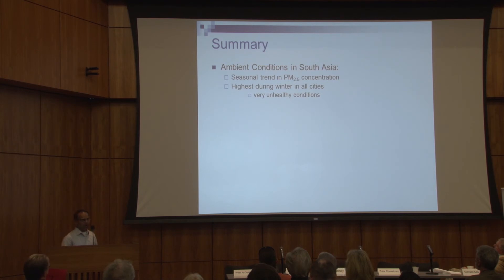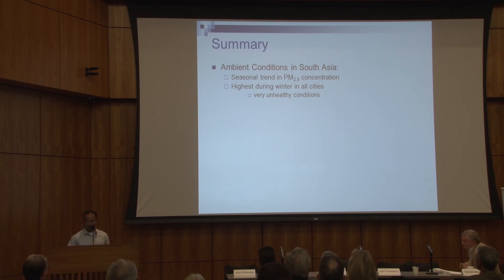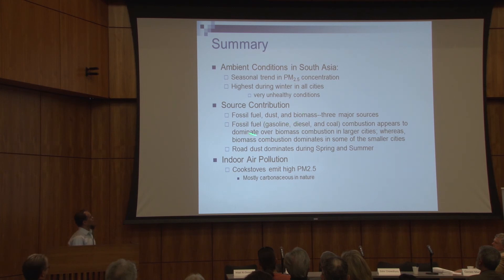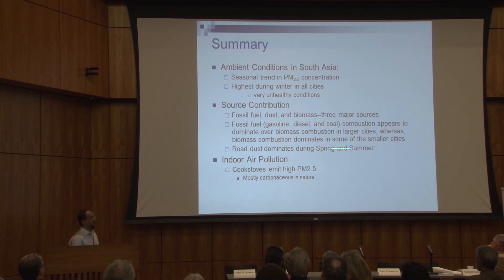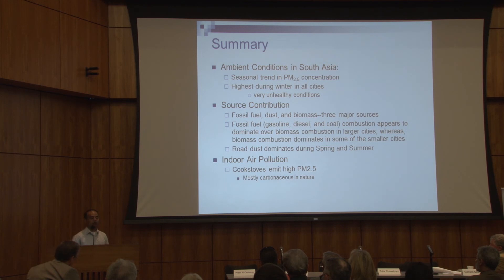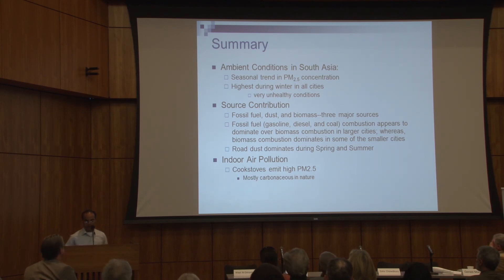In summary, ambient conditions in South Asia show a seasonal trend of PM2.5 concentration — higher during wintertime with very unhealthy conditions, lower in summertime. There are a variety of contributing sources: biomass, dust, and fossil fuel are the three major sources of fine particle emission. Fossil fuel dominates in some cities while biomass dominates in others. Road dust is quite significant during the dry part of the year. For indoor air pollution, cook stoves definitely emit high PM2.5, and some improved stoves being used in the region are not extremely effective, so there is a need to promote better stoves — I'd be very curious to talk to Ramanathan to see how good those stoves are, because they do emit significant carbon in the air.